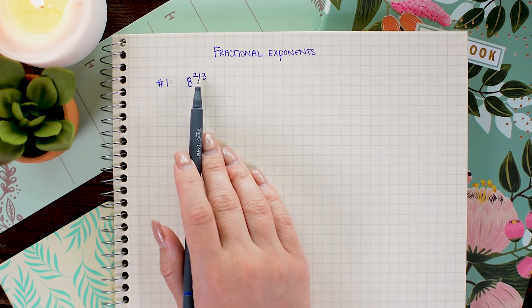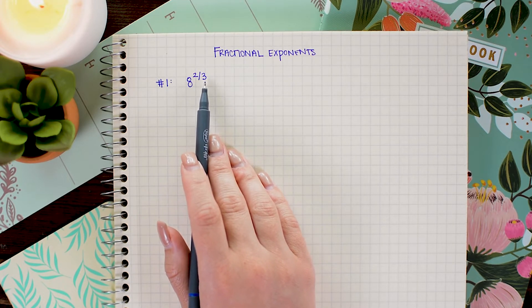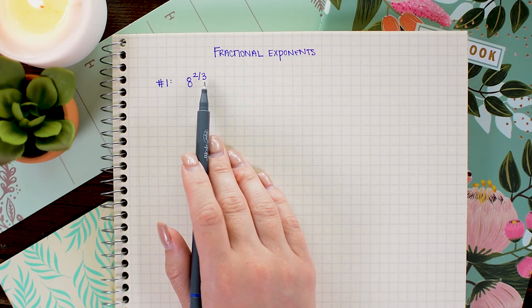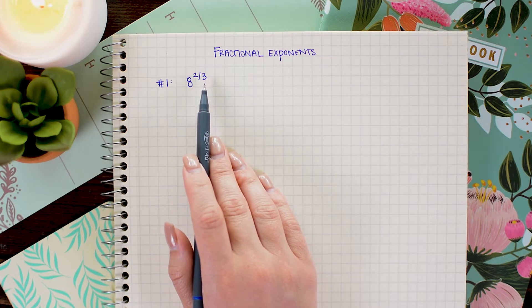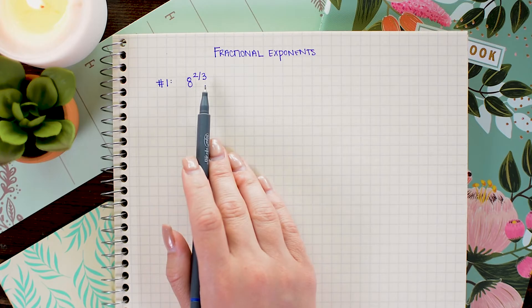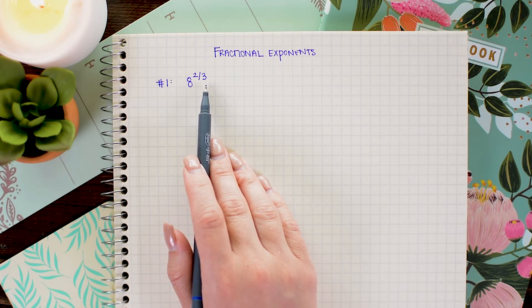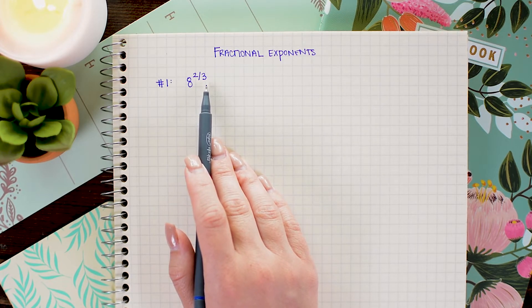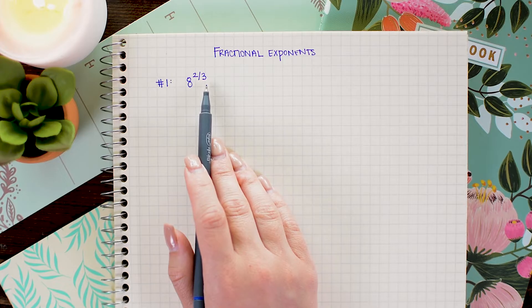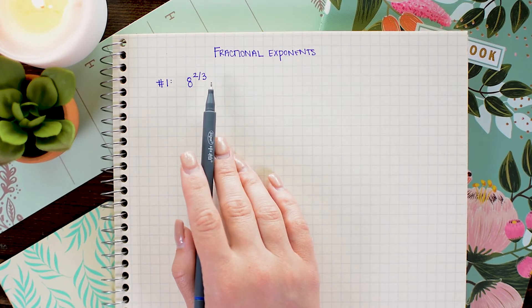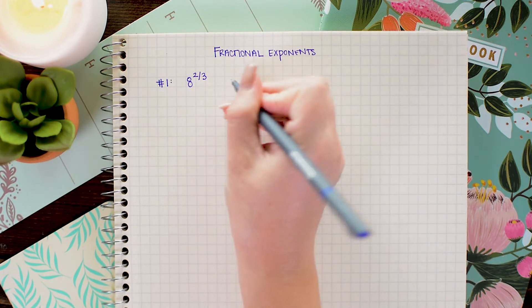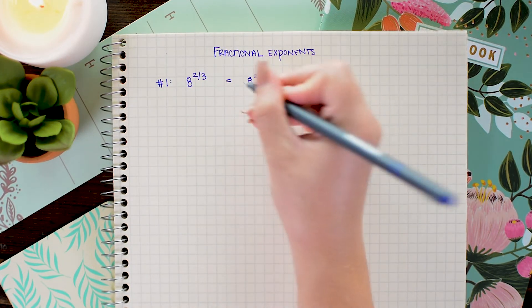Now the difference here is that the denominator adds a new part to our number. It adds a radical, and this radical has the index of whatever the denominator is. So for this example here, the index of the root is 3. So that means that I have a cube root.